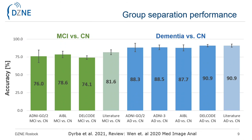Looking at the results for dementia, we obtained a high accuracy of approximately 90% across all samples, which nicely reflects values reported by other studies in the literature. For detecting the prodromal stage of amnestic mild cognitive impairment, the accuracy reaches about 75%, which is slightly lower than values reported by other studies.